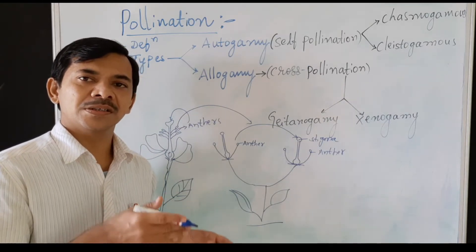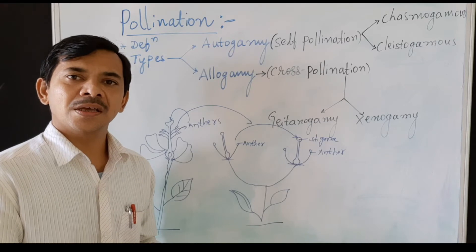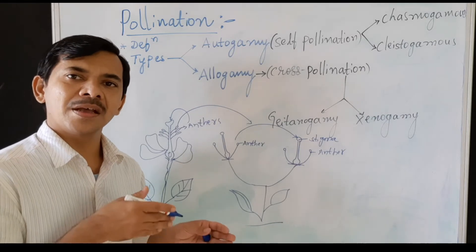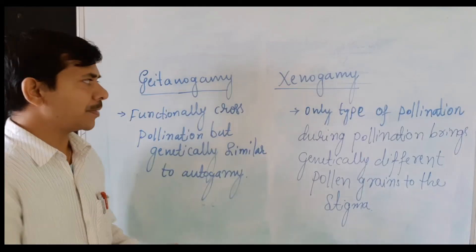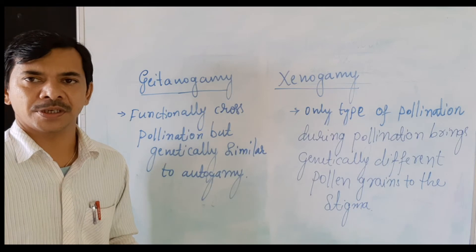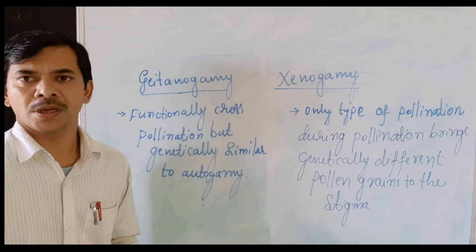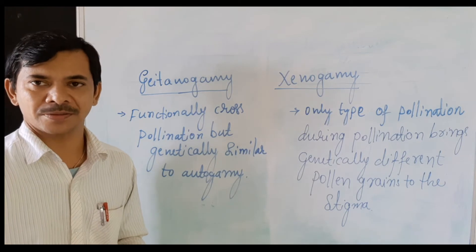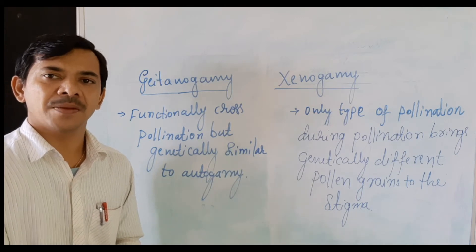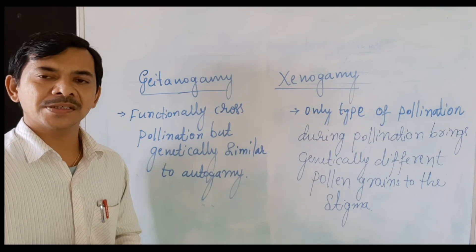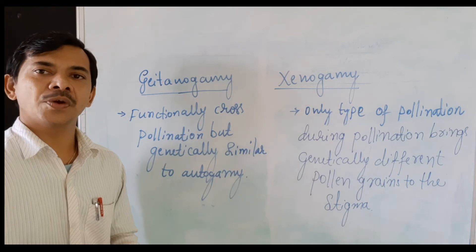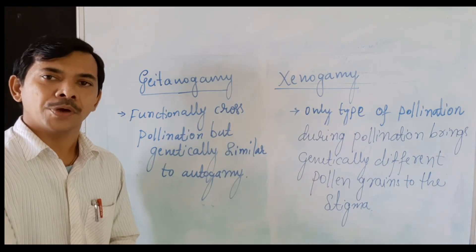So these are the types of pollination: autogamy and allogamy. In allogamy we study geitonogamy and xenogamy. Geitonogamy is functionally considered as cross-pollination but genetically it is similar to autogamy, because the pollen grains are transferred from the anther to the stigma of another flower on the same plant, so no genetically different plants are produced.